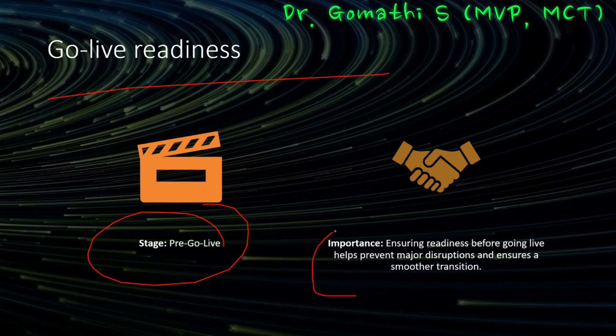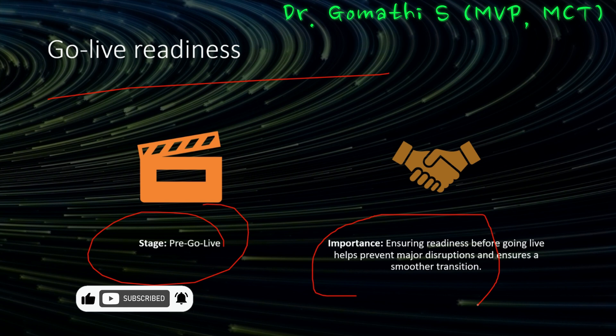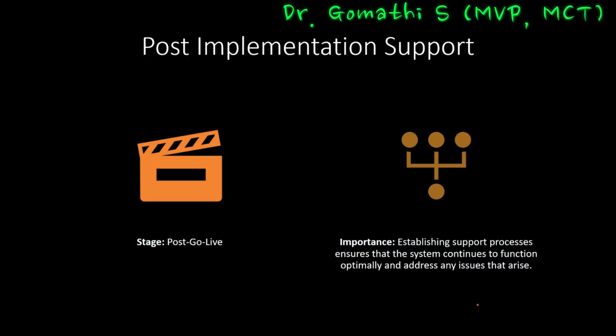Next comes go-live readiness, the pre-go-live stage. Just like a pilot performs pre-flight checks, ensuring go-live readiness prevents unexpected turbulence during the launch of the new system. Before the new system launches, we meticulously review all aspects — configuration, integration, data migration, and user training — to ensure a seamless transition. We double-check that all components are in place, fine-tuning any last-minute details to guarantee a successful system launch and minimize the chance of disruptions.